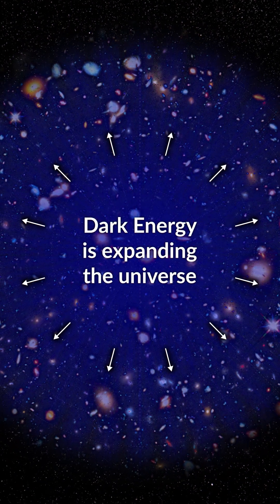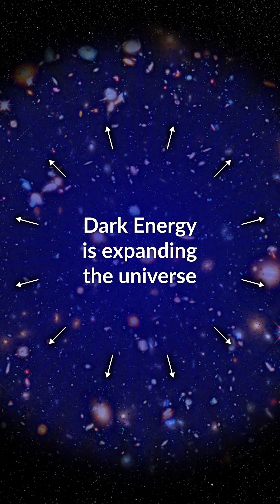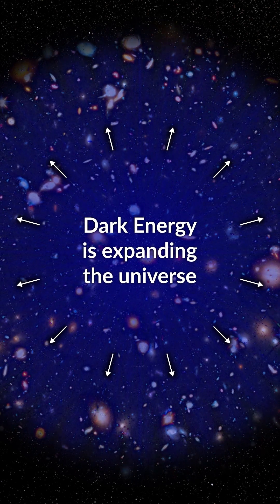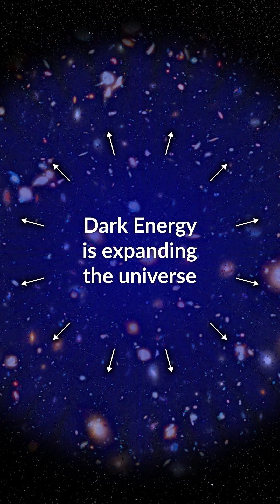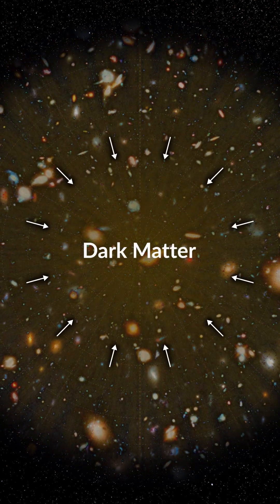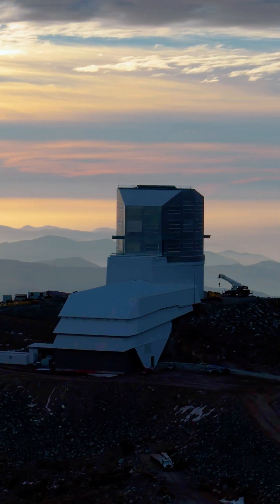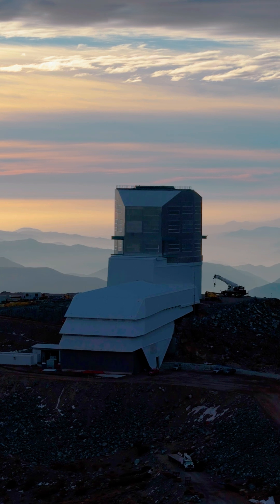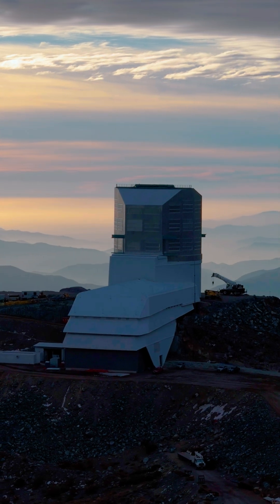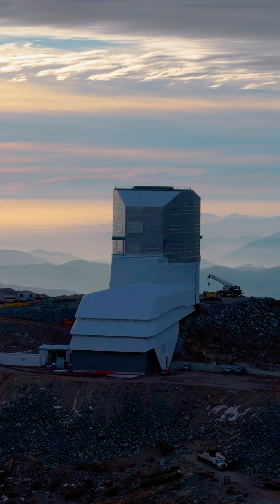Today, the dark energy is winning. We are in a universe which is in accelerated expansion — dark energy is pushing the world, making the acceleration of the expansion possible. But in the past, dark matter was dominating. This evolution of dark energy and dark matter over time is what the Rubin Observatory and its LSST camera will study over the ten years of its survey of the sky.